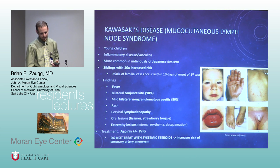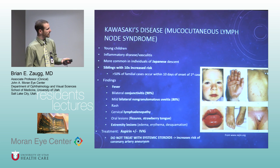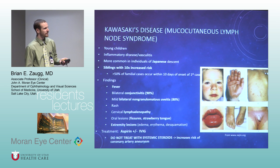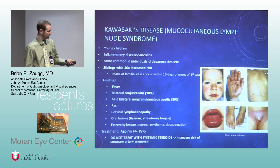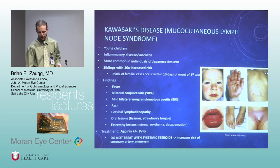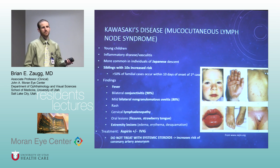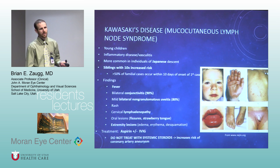Kawasaki's disease in young kids: you'll get bilateral conjunctivitis in a majority of them, and can have uveitis. The systemic treatment is important on tests — don't use steroids; treat with aspirin and IVIG because of the risk of coronary artery aneurysm. If you diagnose Kawasaki's, get an echocardiogram to look for coronary aneurysms.